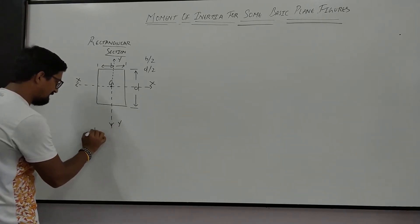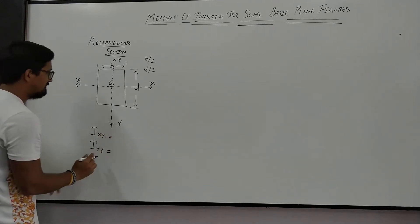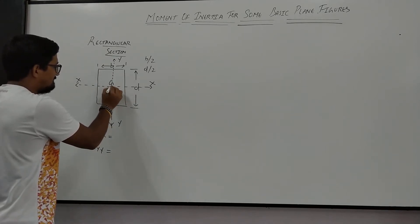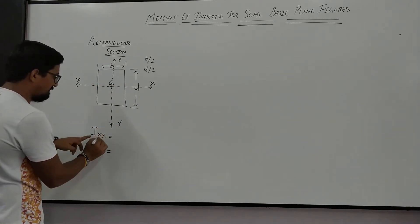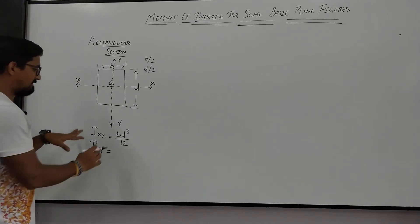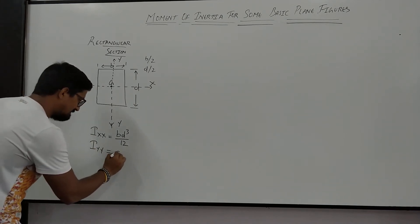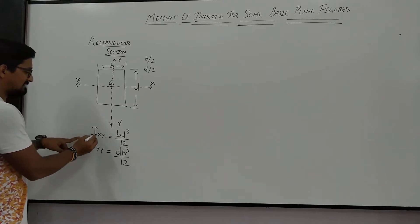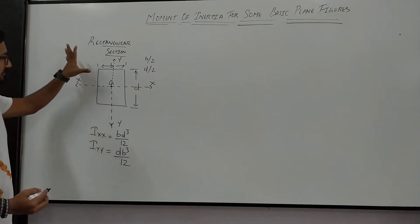The moment of inertia about the XX axis and the YY axis — the point at which the XX and YY axis intersect is known as the centroid or CG. So Ixx is given by BD³ by 12. You can note it down: BD³ by 12 is the relation for calculating moment of inertia for a rectangular section about the XX axis. Similarly for the YY axis it is DB³ by 12. These two are the relations for moment of inertia about the XX and YY axes for a rectangular section.